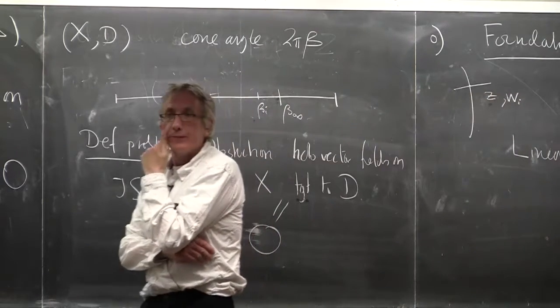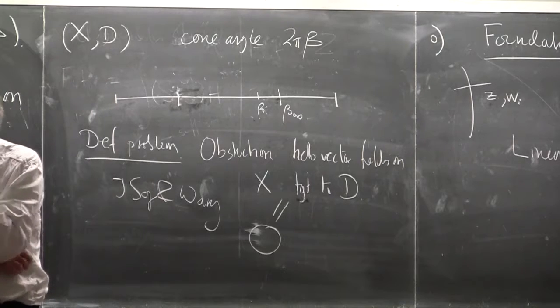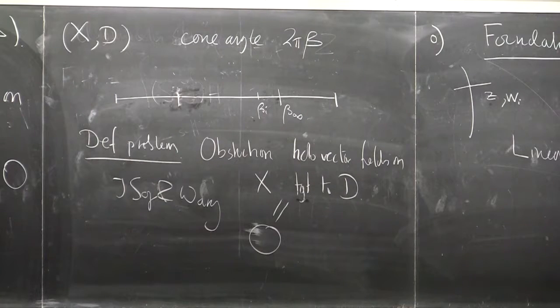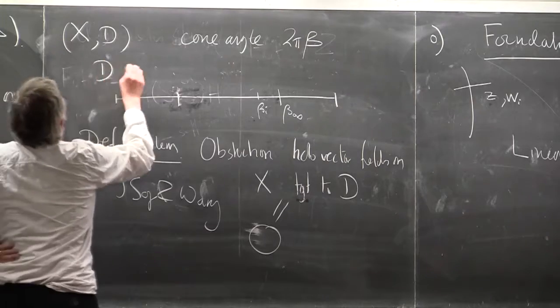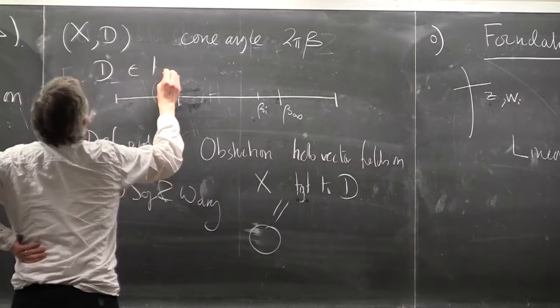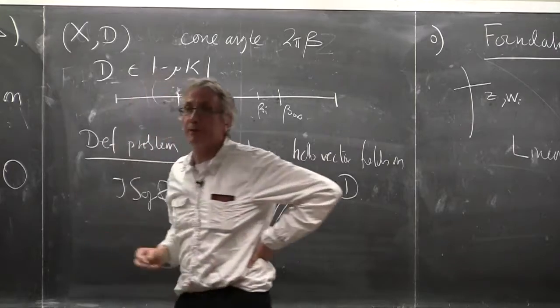This is assuming d is plurianticanonical. Yes, as I say, d is in some fixed multiples of minus K.